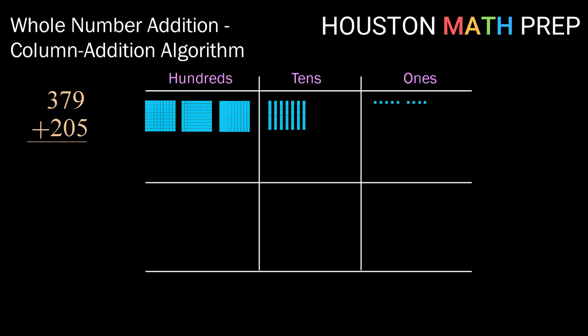Now going ahead and adding in our blocks for 205. We have 2 hundred blocks and 5 one blocks. Okay, so the way that this algorithm works once you've got yourself set up is you're going to start with your ones column and do any regrouping that you have.